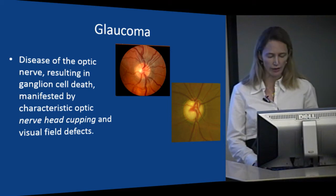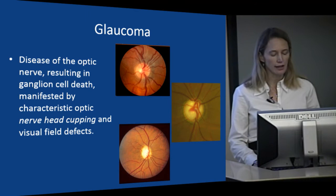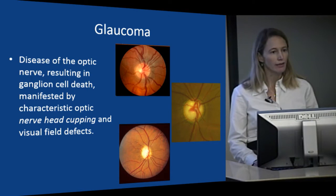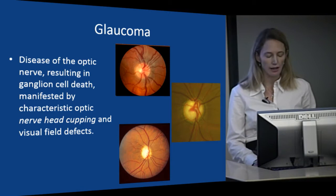The next picture is a glaucomatous cupped nerve, and this is important because there are many other optic neuropathies, but most of them cause pallor of the optic nerve, not cupping. Why glaucoma cups and other diseases lead to paleness and not cupping is really unclear.